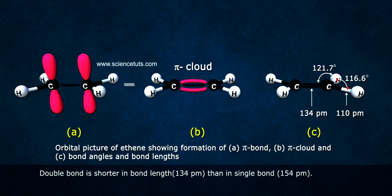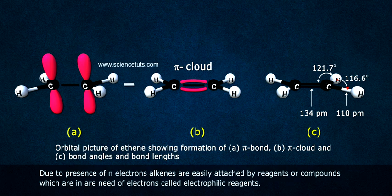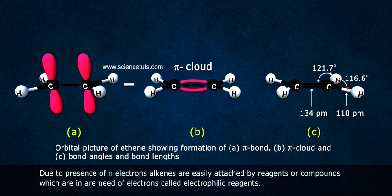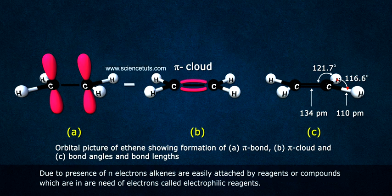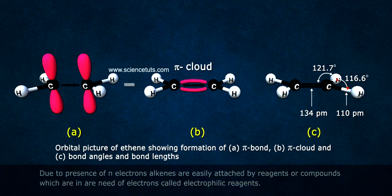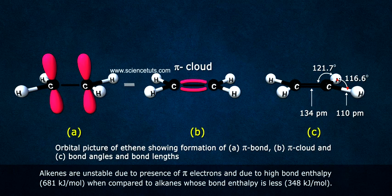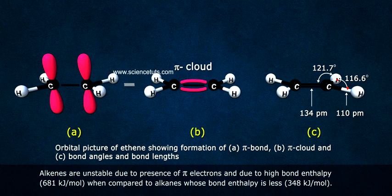Due to presence of pi electrons, alkenes are easily attacked by reagents or compounds which are in need of electrons, called electrophilic reagents.